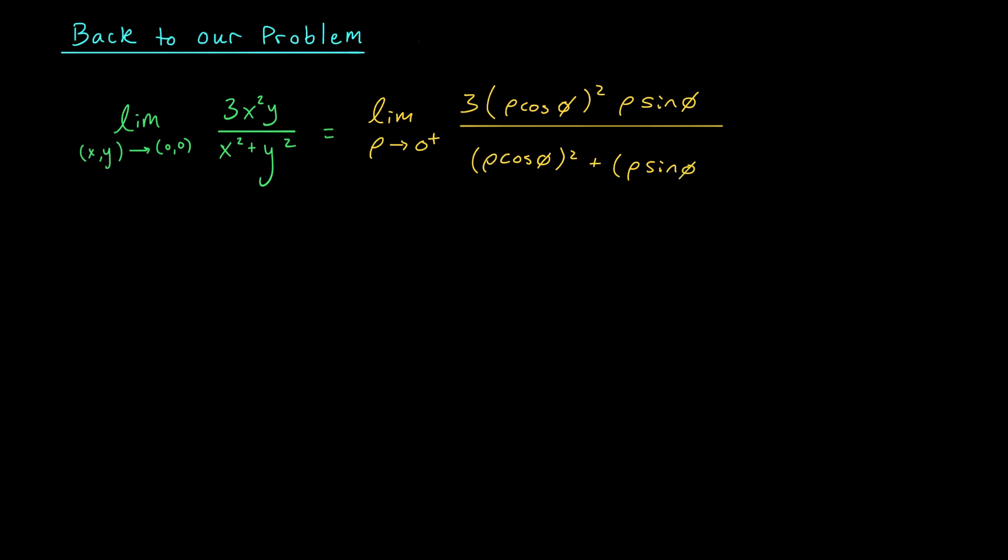Just like before, we're going to expand and simplify. In the numerator, I have 3ρ³ cos² φ sin φ. And in the denominator, it looks like each term has a ρ². So I'm going to factor that out to get ρ² (cos² φ + sin² φ). Now, at this point, there's quite a bit that can be simplified. Cos² φ plus sin² φ is, of course, 1, and it looks like I can cancel some ρ. I'll cancel a ρ² up top and down below. That leaves me with the limit as ρ goes to 0 from the right of 3ρ cos² φ sin φ.